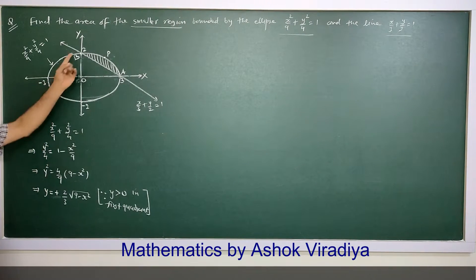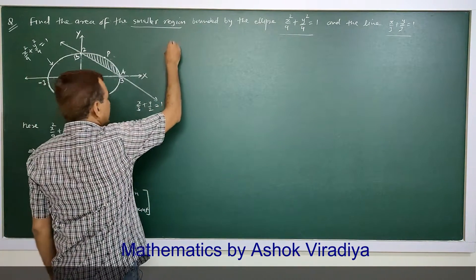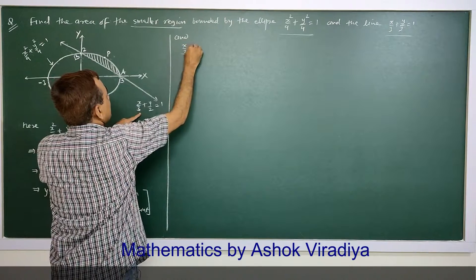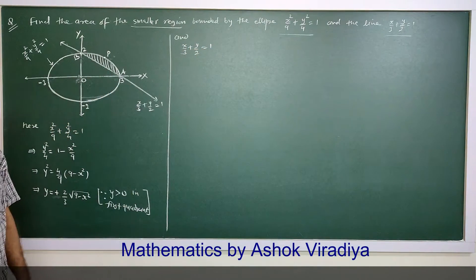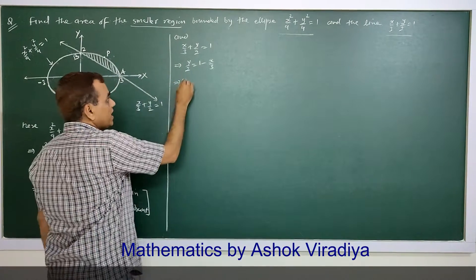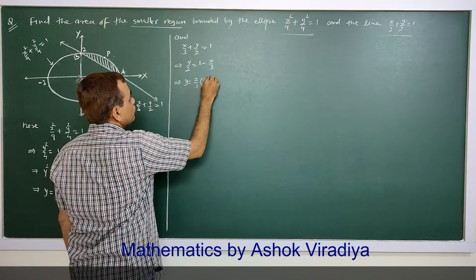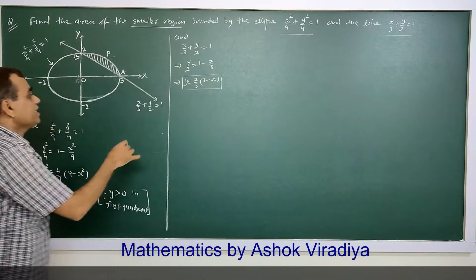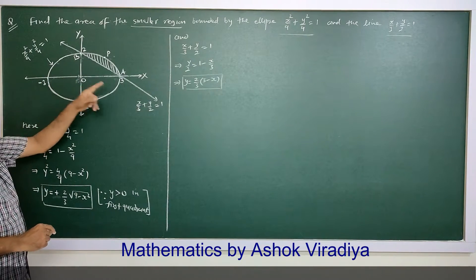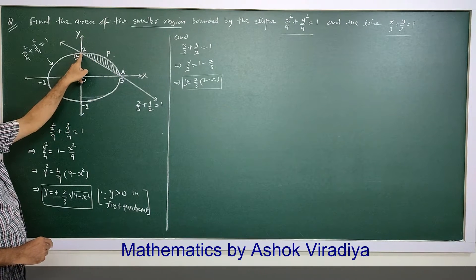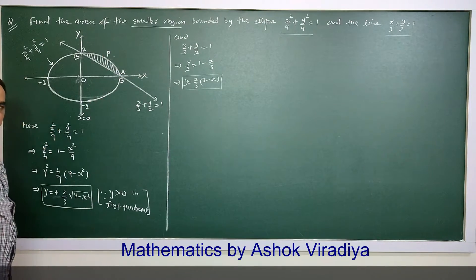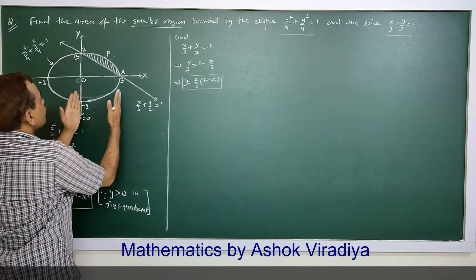This value of y from the ellipse will be used in calculating the first area. Now for the equation of line: x by 3 plus y by 2 equal to 1, so y by 2 equals 1 minus x by 3, giving y equal to 2 by 3 into 3 minus x. It is clear from the diagram that they are intersecting at x equal to 3 and x equal to 0.